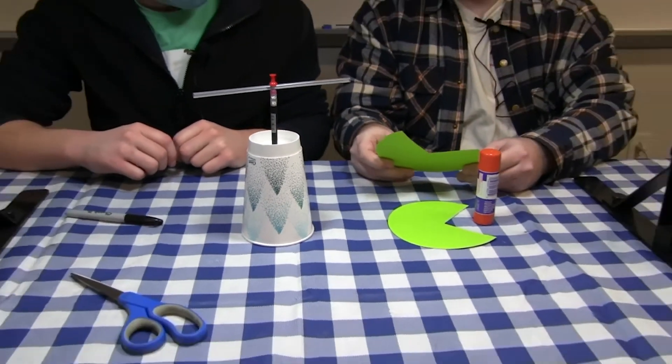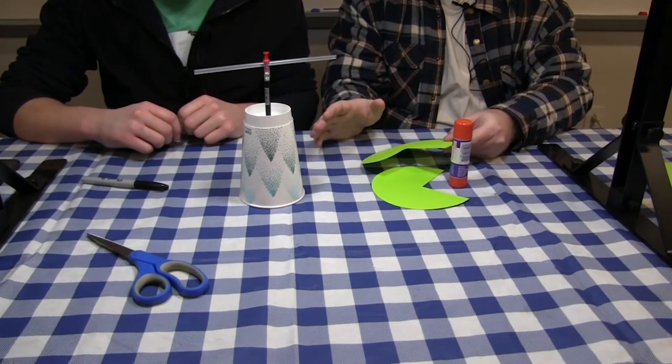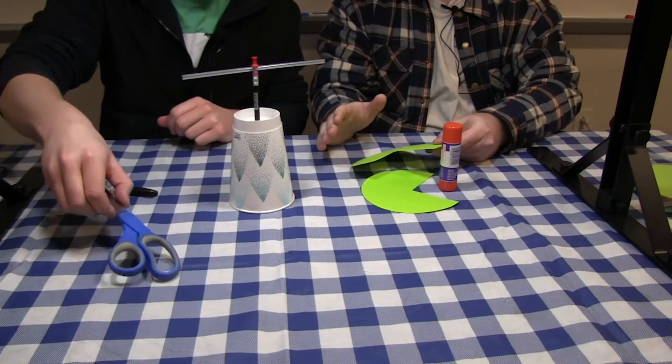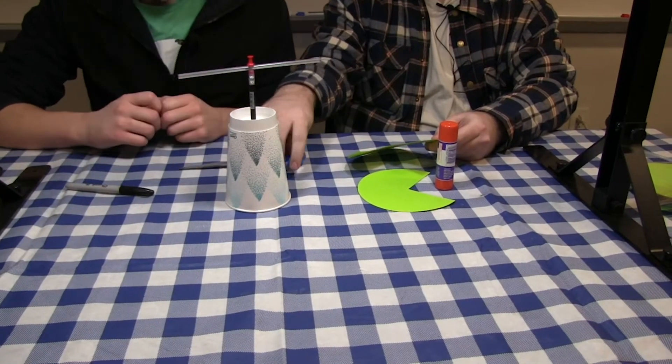Then we will grab our construction paper. It does not have to be round. A rectangle piece of construction paper will be just as fine. You can cut the corner off of that.